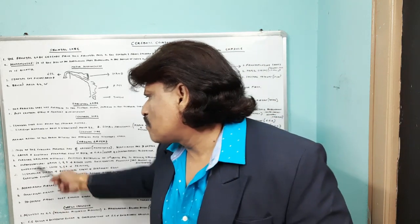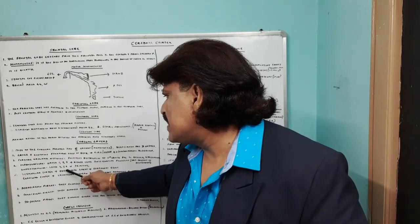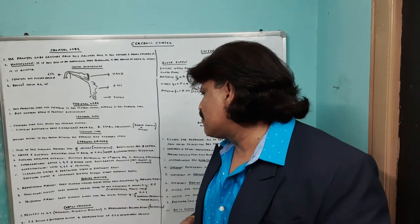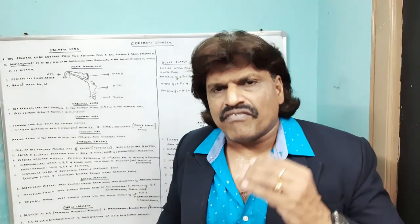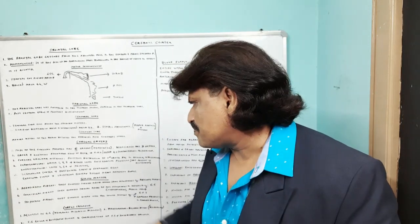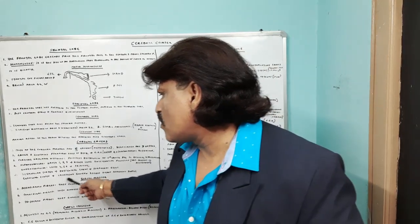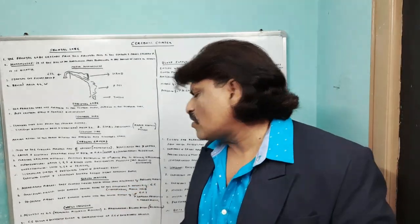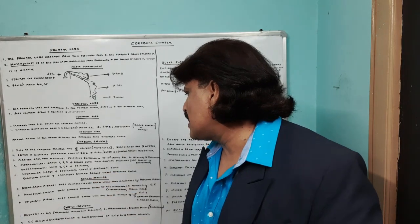The supragranular layers — layers one, two, and three — are the primitive layers responsible for primitive activity, also seen in lower animals as allocortex. Layers four, five, and six are highly developed and responsible for higher-level integrative function not present in allocortex. The agranular cortex of the precentral gyrus contains pyramidal cells. The visual or calcarine cortex has granular cells that receive a lot of afferent input.